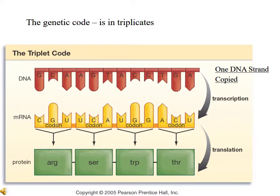The genetic code works in triplicates — meaning that three nucleotides carry the information for a given amino acid. The DNA molecule on top has the sequence G, C, A, A, G, T, A, C, C, T, G, A. During the process of transcription, this information is copied over into the messenger RNA. A G will always form a C, a C will always form a G, and A will form a U because U is what is present in RNA.